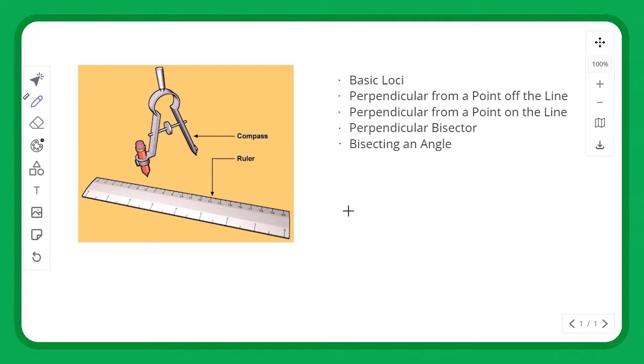Okay, we're going to be looking at loci and constructions today, starting off with basic loci and then finding the perpendicular from a point off the line, perpendicular from a point on the line, the perpendicular bisector and bisecting an angle.